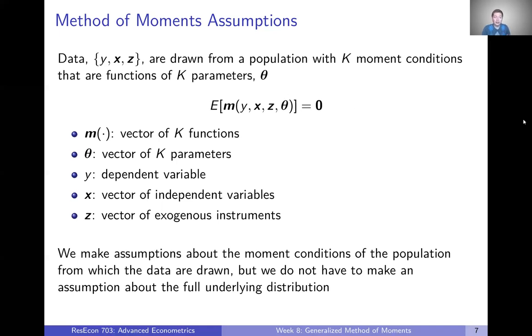Just to be clear, we're making assumptions about these moments, which help describe and define the population from which our data are drawn, but we're not making a full distributional assumption. Nowhere in here are we saying this is a normal distribution. We could use things like the mean and the variance, but we're not imposing that those mean and variances necessarily correspond to something like a normal distribution. That gives us a little more flexibility using GMM as opposed to maximum likelihood.